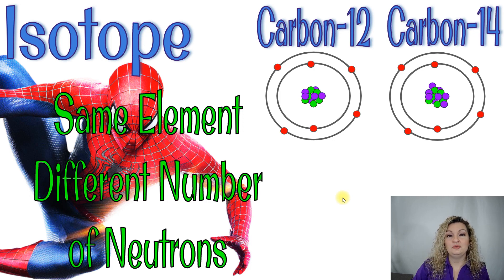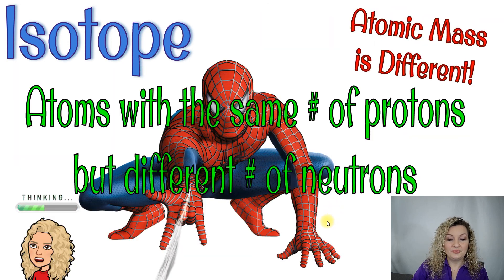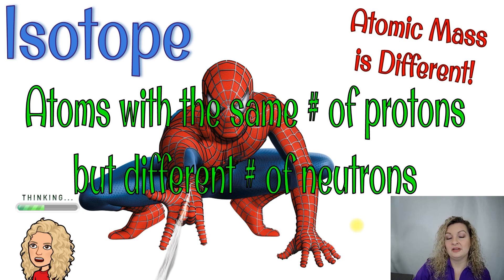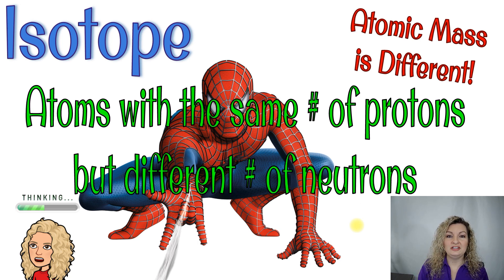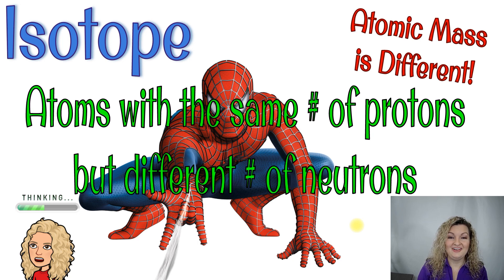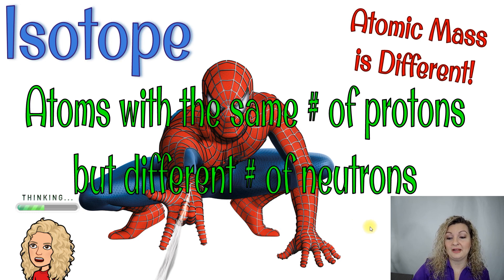We're just changing one component of it, like changing the skins of our Spider-Man character on Fortnite. If we have an atom with the same number of protons but a different number of neutrons, that is what an isotope is. We're changing the number of neutrons in our atom, and really what that changes is the atomic mass. So isotopes are the same element, different number of neutrons, and therefore they have a different atomic mass.